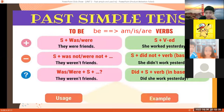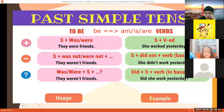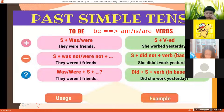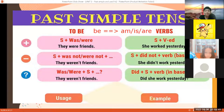Khi nhắc tới am, is, are, cô nghĩ là nhiều bạn biết. Tại sao mình lại dùng am, is, are? Ví dụ khi mình nói là 'I am 8 years old' — bởi vì ở thời điểm hiện tại con đang 8 tuổi, cho nên mình sẽ dùng 'I am 8 years old.' Be ở thì hiện tại được chia là am, is, are — có 3 cái được chia ra!